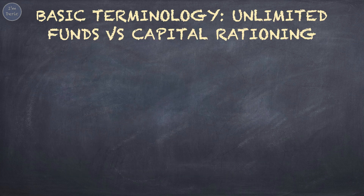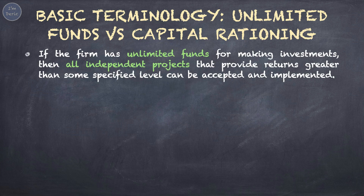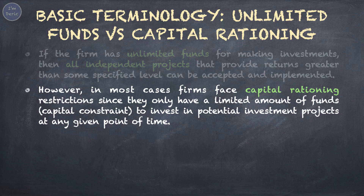Another comparison is between unlimited funds and capital rationing. If the firm has unlimited funds for making investments, then all independent projects that provide returns greater than some specified level can be accepted and implemented. But unlimited funds are not realistic — it's impossible for a company to have unlimited funds, no matter how big. That's why in most cases, firms face capital rationing restrictions since they only have a limited amount of funds to invest in potential investment projects at any given point in time. In short, capital rationing is the act of placing restrictions on the amount of new investments or projects undertaken by a company.